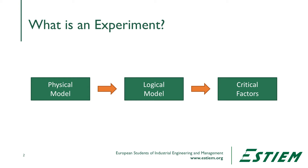What is an experiment? There are different types. We begin looking at the world through a physical model or a logical model, and out of that model we get our critical factors — those are the X's. Our Y is a function of X, which has come out of our DMA study. We evaluate how those factors can be changed to influence process performance: do the factors shrink the variation, shift the mean, or both? The logical model tries to understand the interrelationships — those are interaction effects.